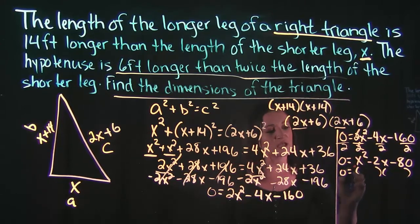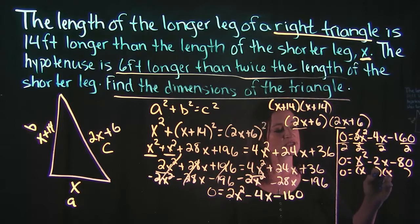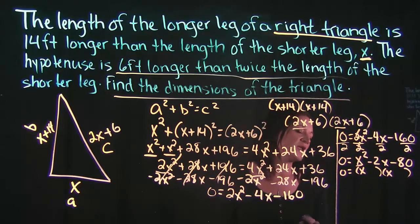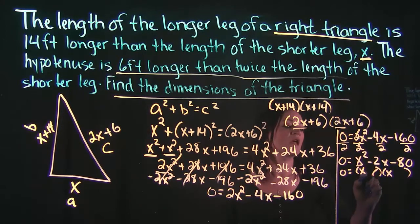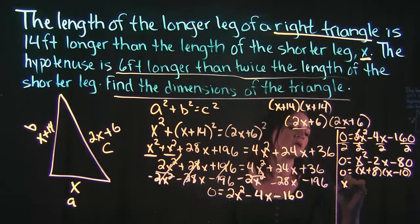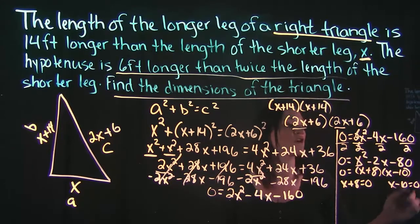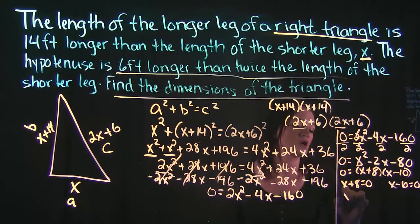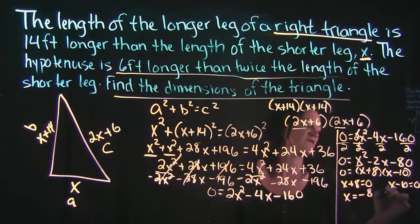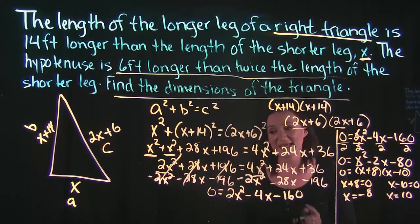When we factor this, looking at the x squared we know that's x times x. Looking at 80, we're looking for what multiplies to get 80 or adds or subtracts to get 2. That's going to be an 8 and a 10. The 10 needs to be negative, the 8 is positive, and that means we're going to use the zero factor property which tells us that we can take each one of our factors here, set them each equal to zero and solve. So we're going to get x equals negative 8 and x equals 10.